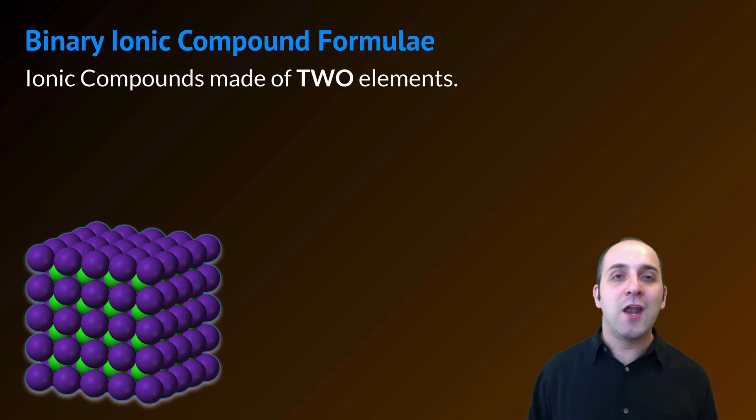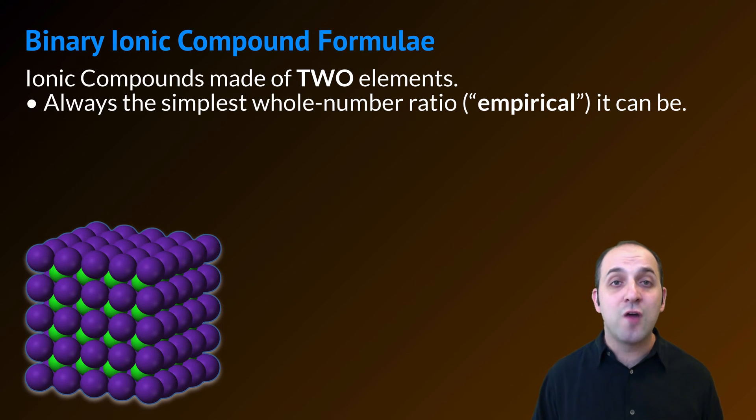Binary ionic compounds are ionic compounds made out of two elements and only two elements. When we're determining the formula of a binary ionic compound, that formula is always going to be the simplest whole number ratio it can be. We know, of course, that the structure of an ionic compound is a network structure. It just goes on forever, but what we're interested in here is just the simplest ratio, the empirical ratio, or what we might also call the formula unit when we're dealing with ionic compounds.